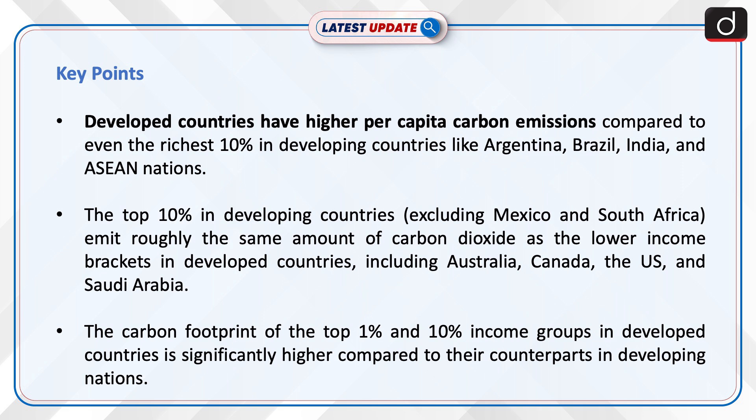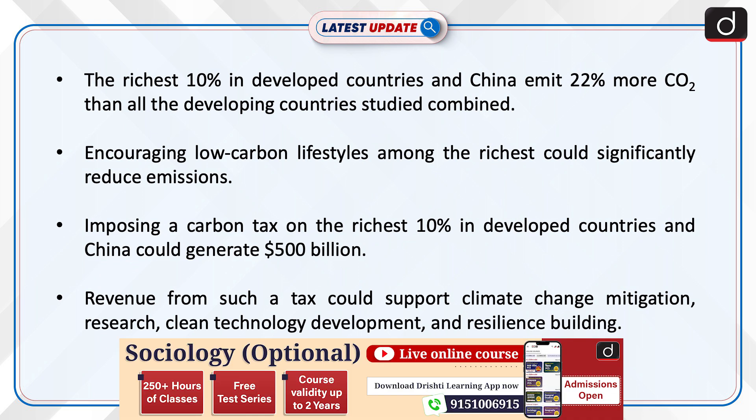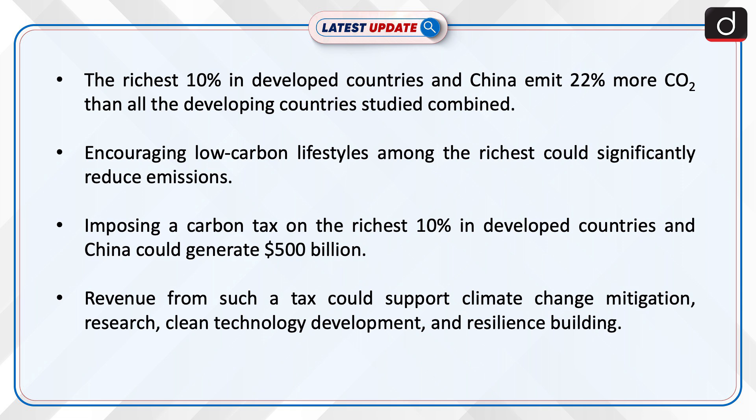The carbon footprint of the top 1% and 10% income groups in developed countries is significantly higher compared to their counterparts in developing nations. The richest 10% in developed countries and China emit 22% more CO2 than all the developing countries studied combined. Encouraging low carbon lifestyles among the richest could significantly reduce emissions. Imposing a carbon tax on the richest 10% in developed countries and China could generate $500 billion.